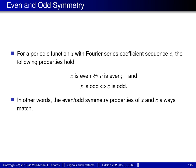The next property relates to function symmetry — the evenness and oddness of functions. For a periodic function X with Fourier series coefficient sequence C, the function X is even if and only if C is even, and X is odd if and only if C is odd. In other words, the even and odd symmetry properties of X and C always match, meaning the Fourier series preserves signal symmetries.